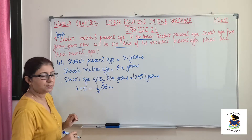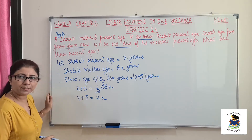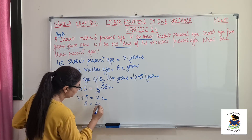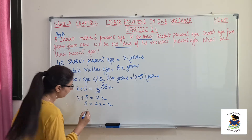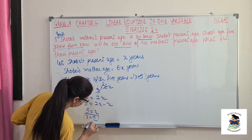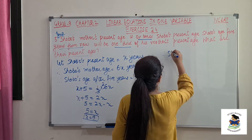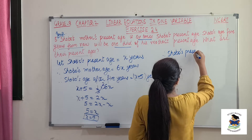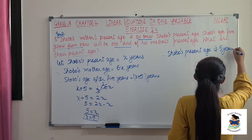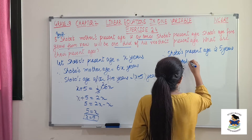Now we will solve this. x plus 5 equals one third of 6x, which is 2x. Shifting x to the other side: 5 equals 2x minus x, so 5 equals x. Switching sides, x equals 5. Therefore Shobo's present age is 5 years.